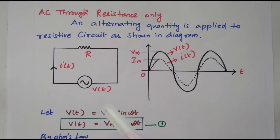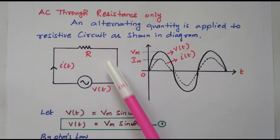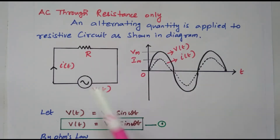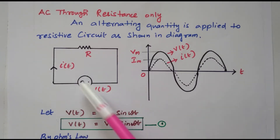Welcome viewers. In this video we'll see AC through resistance only — when the AC current is flowing through the resistor, what is the behavior of the voltage and current, what is the average power, and what is the instantaneous power. We will discuss these topics. Consider the alternating quantities applied to the resistive circuit. The AC voltage V(t) is applied to the resistor, and I(t) is the current flowing through the resistor. Because the current and voltage change with time, they are expressed as V(t) and I(t).